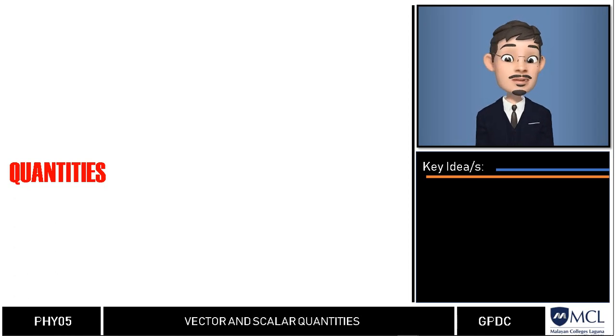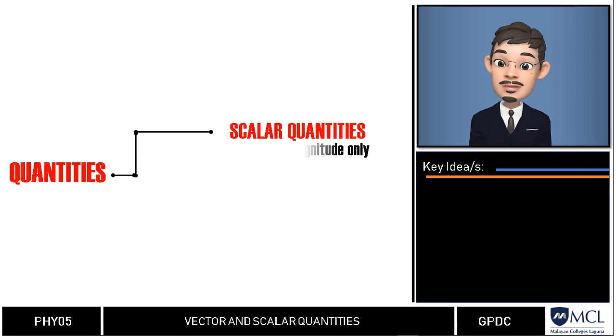Say you have 50 kilograms of rice, or your body temperature is about 37 degrees Celsius, you complete one meter dash for six seconds. In physics, we call these values scalar quantities.